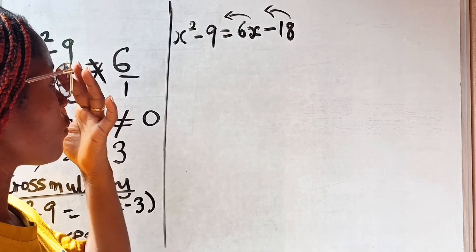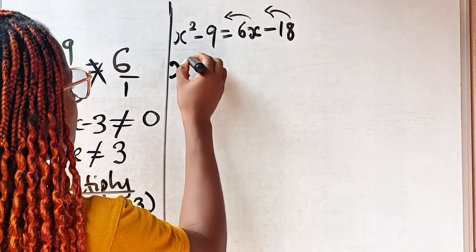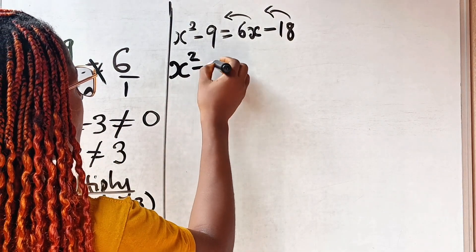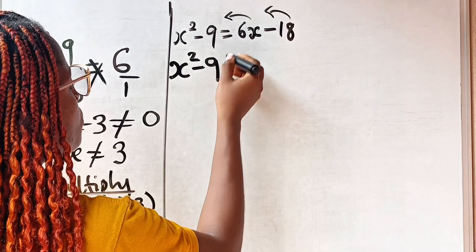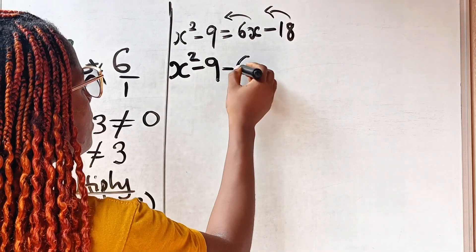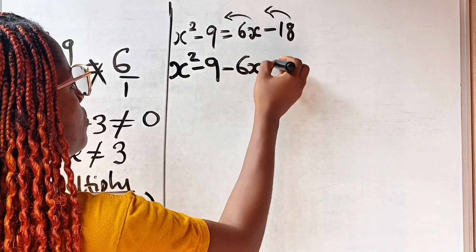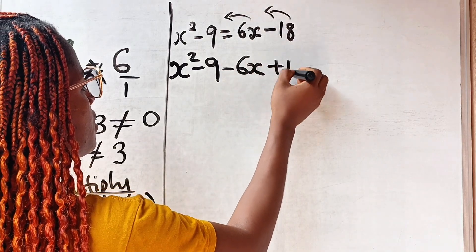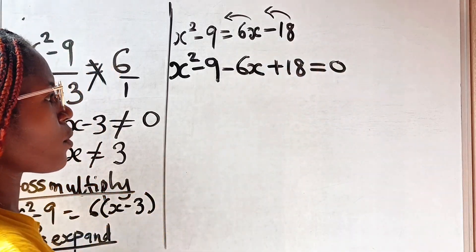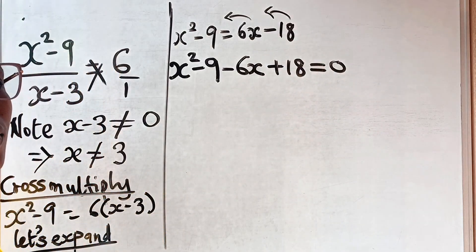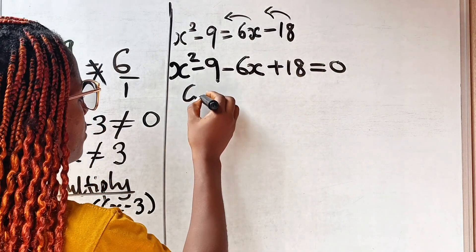Moving forward, we have x squared minus nine, which becomes minus 6x, and this term becomes plus 18, all equal to zero. Now let us group like terms.